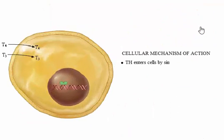Thyroid hormones enter cells by diffusion. Recall that 20 times more T4 than T3 is secreted from follicle cells. By converting T4 to T3, the liver and kidney produce about 80% of the free-circulating T3. Other target tissues also produce T3, the active form of the hormone.